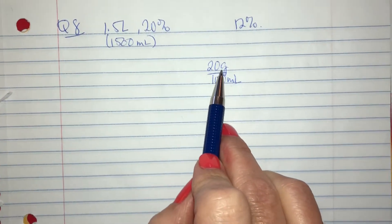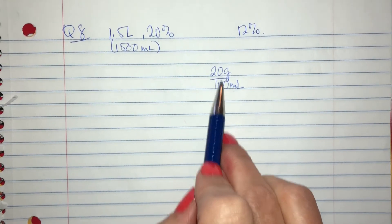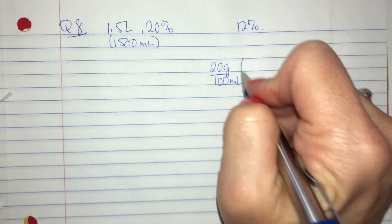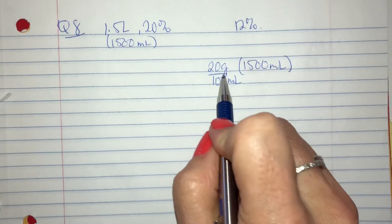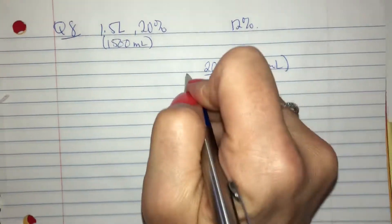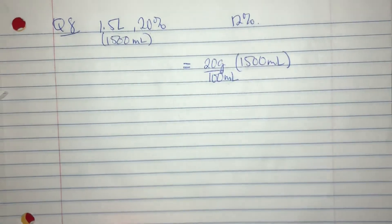So I'm going to say I've got a 20% solution or 20 grams over 100 mils and I have 1,500 mils of it. So times, right?